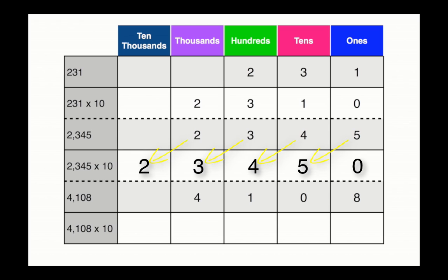Let's try the final one together. 4,108 times 10. Again, 10 has one zero, so you're going to place that zero in the ones column and move everything over to the left by one place value. Your new solution is 41,080.